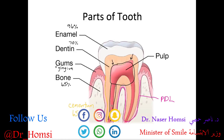Ligaments usually connect bone to bone, like the ACL, but here the periodontal ligament connects a tooth — which is not technically a bone — to the jawbone. So we have the enamel, dentin, and pulp layers of the tooth, the gums and bone that support it, the PDL that holds it to the bone, and the cementum layer of the root.